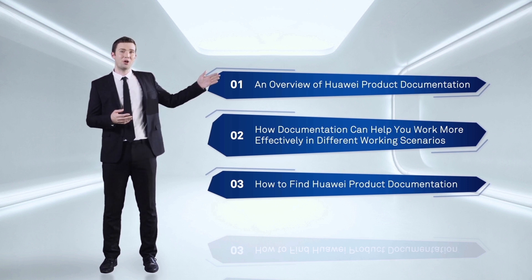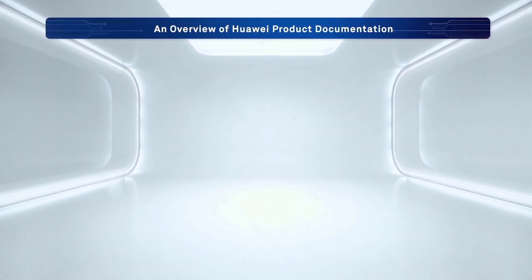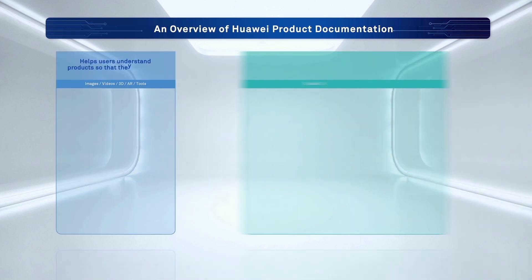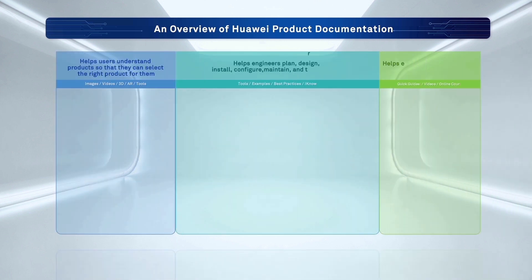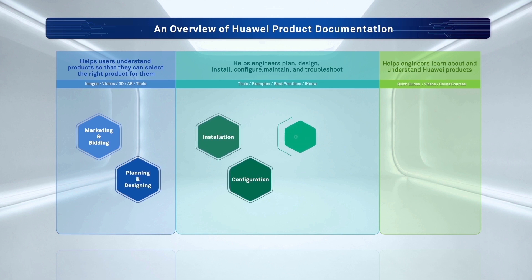Now I'll give an overview of Huawei product documentation. Huawei product documentation is designed for seven different scenarios: marketing and bidding, planning and designing, installation, configuration, O&M, troubleshooting, and learning and training.